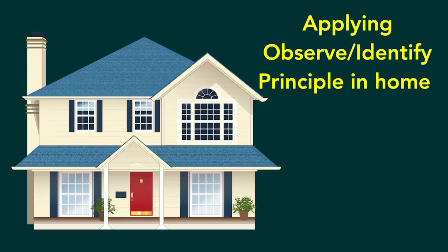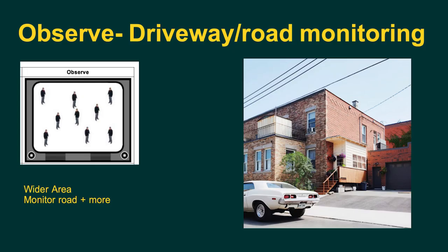Let's give a real-life example of how to apply these ideas when fitting cameras in your home. Take observe — when might you want to observe? Let's say you've got a driveway. Your goal there is not to identify who's walking on the pathway. An observational-style camera with a smaller individual-to-monitor proportion lets you monitor a wider area — like the front driveway where your guests park — giving some security in that application.